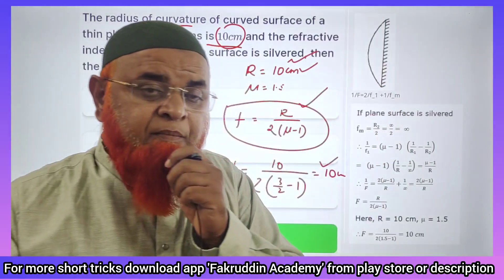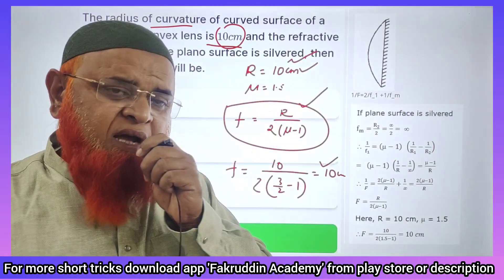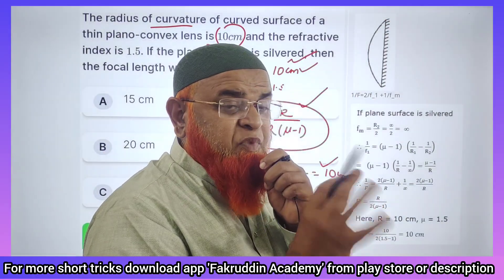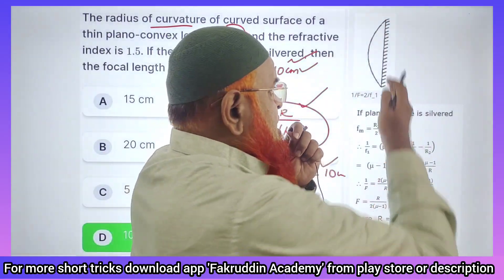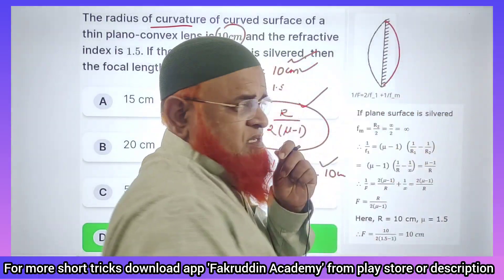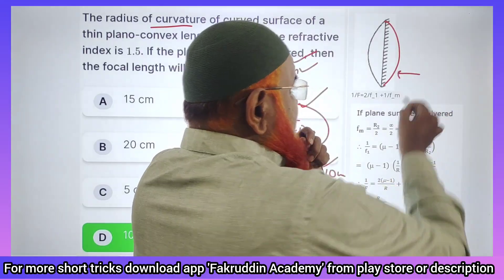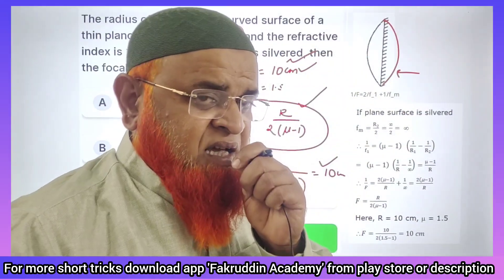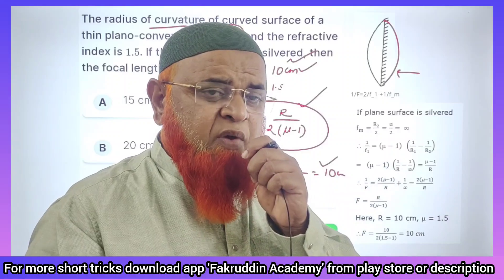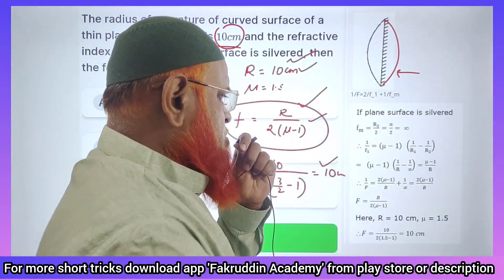A silvered lens is different from an unsilvered plano-convex lens. In a silvered lens, if you silver this part, it behaves like a double lens. The mirror image of this lens will be like this — because it is silvered, it acts like a mirror — and then it acts like an equi-convex lens. So this plano-convex lens silvered on one side is acting like an equi-convex lens.